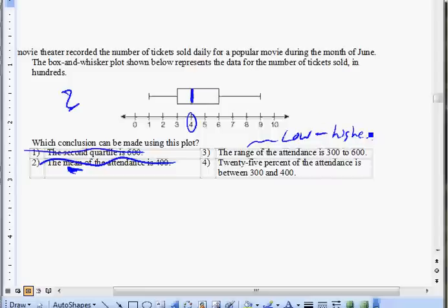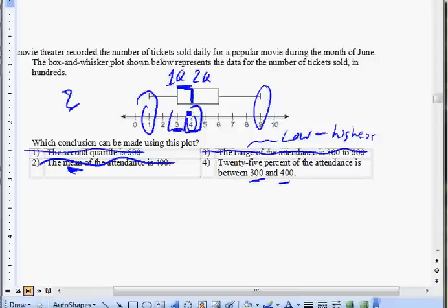By process of elimination it has to be choice four. Let's take a look: 25% of the attendance is between 300 and 400. Between 300 and 400, this area—that is one quartile, from first quartile to second quartile. One quartile is actually 25%, and it is between 300 and 400. That's why this answer would be true and correct, choice four.